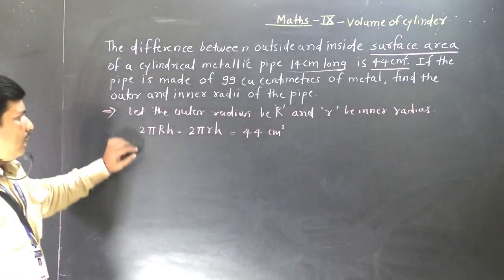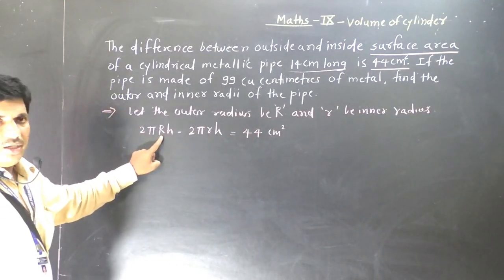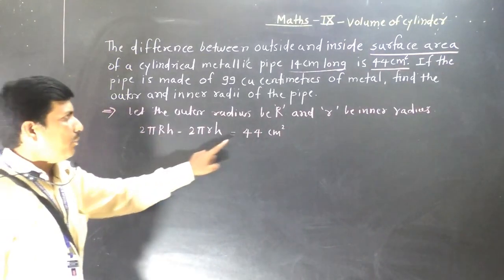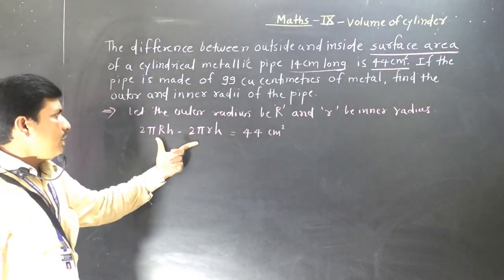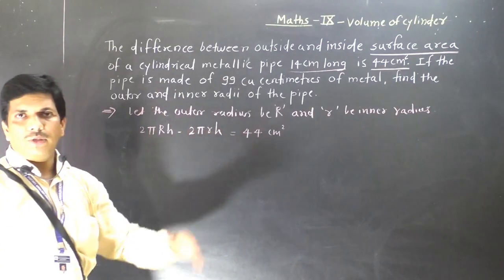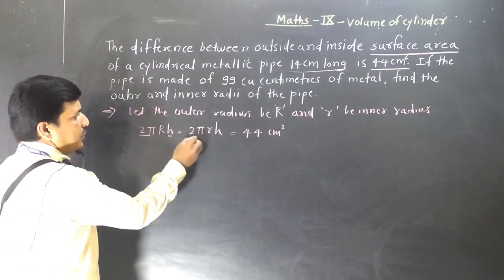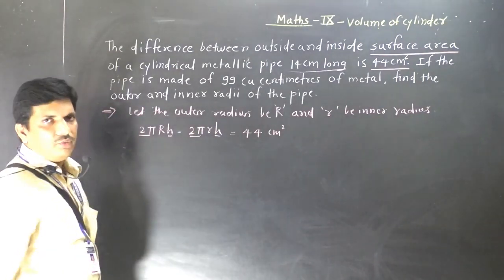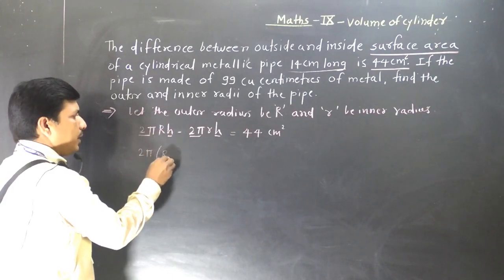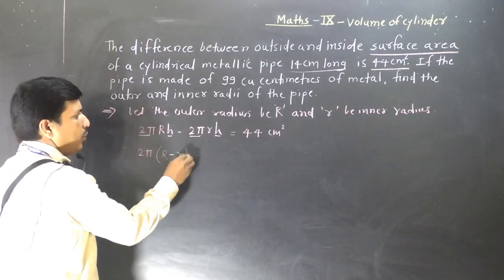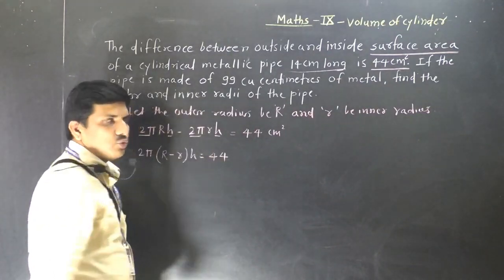We can take 2π and H as common since they appear in both terms. So that gives us 2π (capital R minus small r) times H equals 44 cm square. The outer radius is capital R and the inner radius is small r.